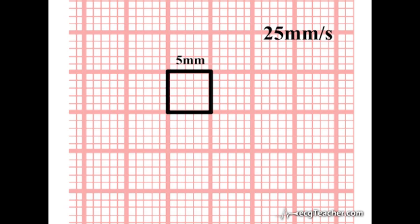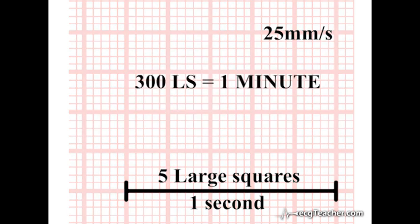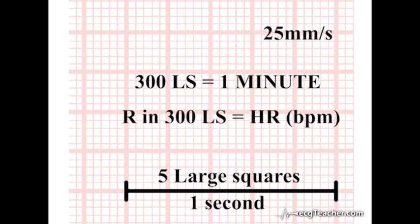At a recording rate of 25 mm per second, 5 large squares are covered in 1 second. So, 300 large squares represents 1 minute. Therefore, the number of R waves in 300 large squares is the heart rate in beats per minute.